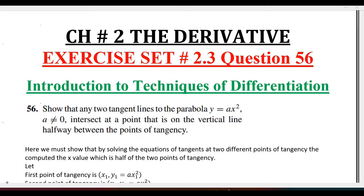Question number 56: show that any two tangent lines to the parabola intersect at a point that is on the vertical line halfway between the points of tangency. So we have x-values, and that x-value should be halfway between the two points of tangency.